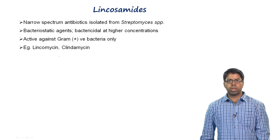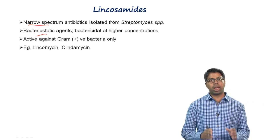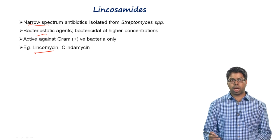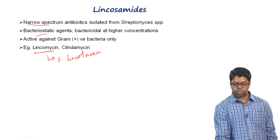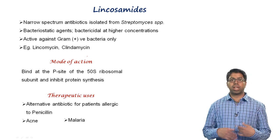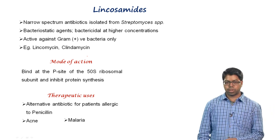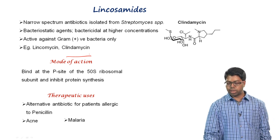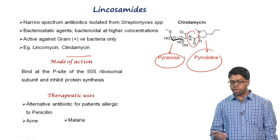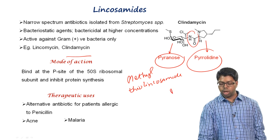Lincosamides are narrow-spectrum antibiotics with bacteriostatic effect at lower concentrations and bactericidal at higher concentrations, active only against gram-positive bacteria with negligible activity against gram-negatives. Lincomycin, the prototype, is obtained from Streptomyces lincolnensis. Like macrolides, they bind at the P site of the 50S ribosomal subunit and inhibit protein synthesis. They are used as alternatives for penicillin-allergic patients, as topical agents for acne, and can kill the malarial parasite. Clindamycin is a semi-synthetic derivative containing methyl-thiolincosamide (pyranose moiety) and propylhygric acid (pyrrolidine ring) linked by an amide bond.